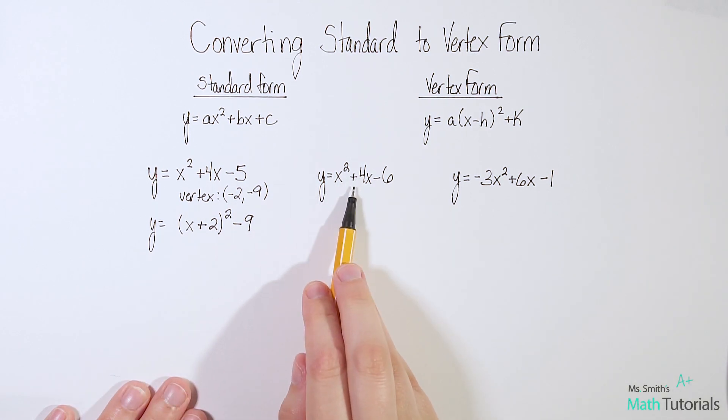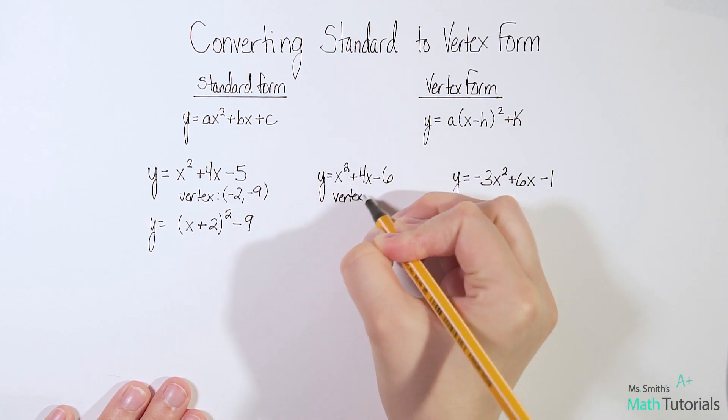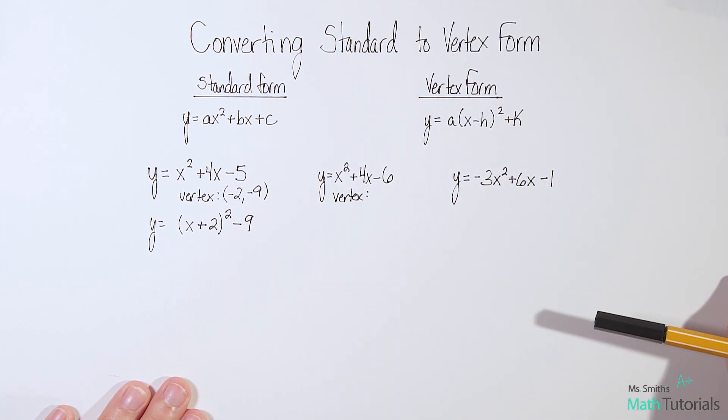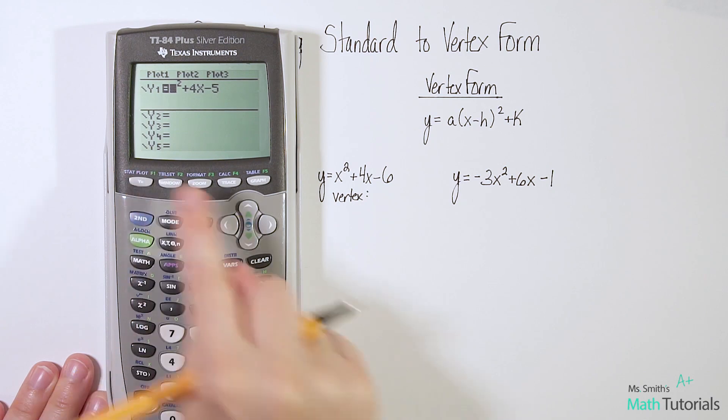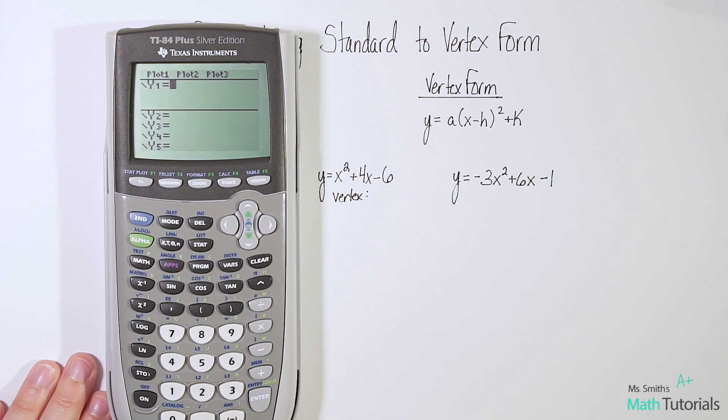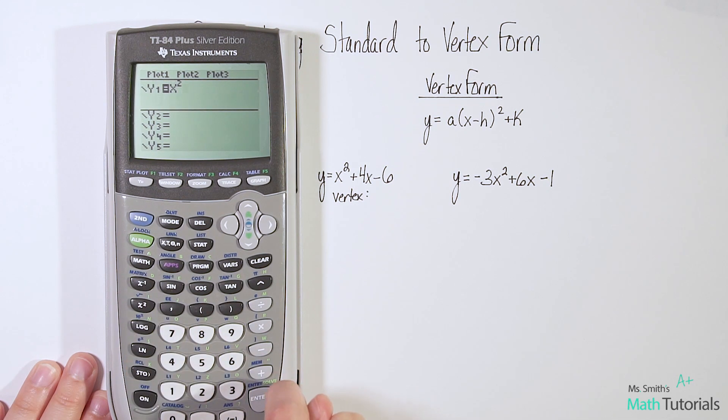For this one, we've got x squared plus 4x minus 6. I need to know first, what is the vertex? I'm going to use my graphing calculator to help me. Go ahead back into your y equals right here. Clear out what we had. And let's do x squared plus 4x minus 6. Let's graph it. Let's see how it looks.